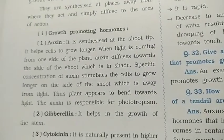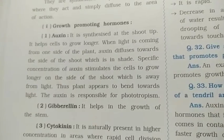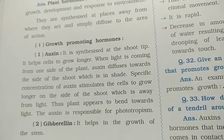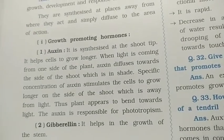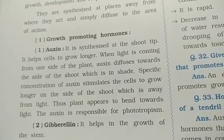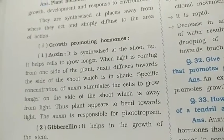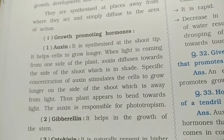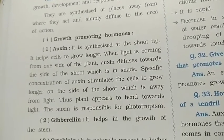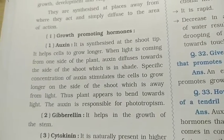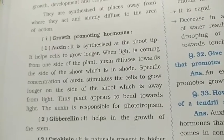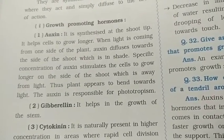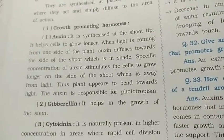For growth-promoting hormones, the first is auxin. It is synthesized at the shoot tip. It helps cells to grow longer. When light is coming from one side of the plant, auxin diffuses to the side of the shoot which is away from the light, at a specific concentration, stimulating those cells to grow longer.